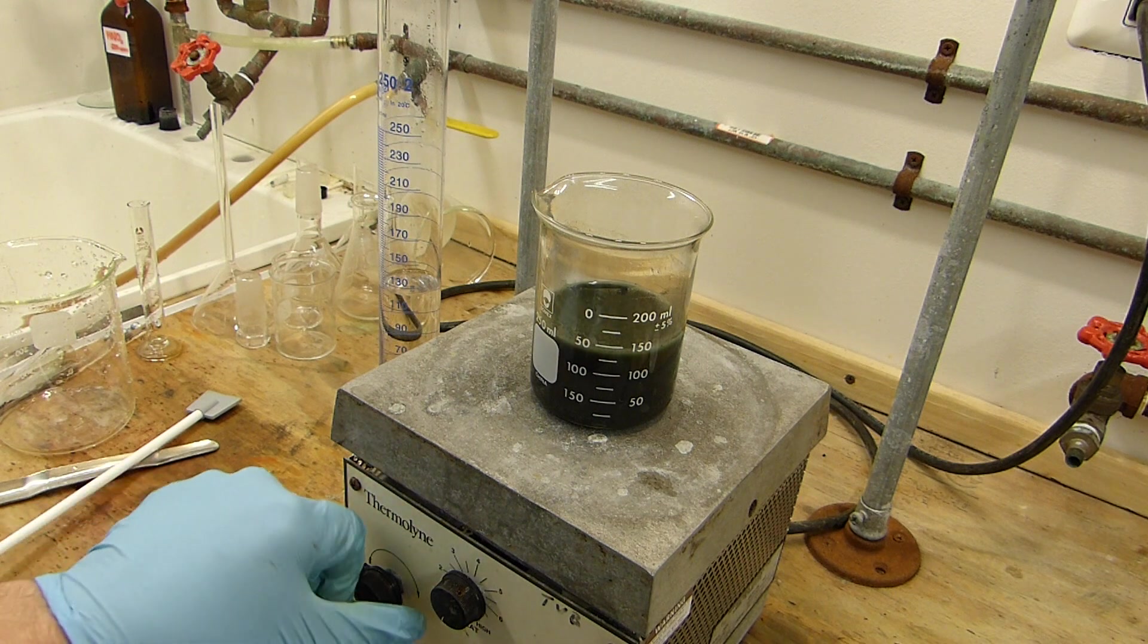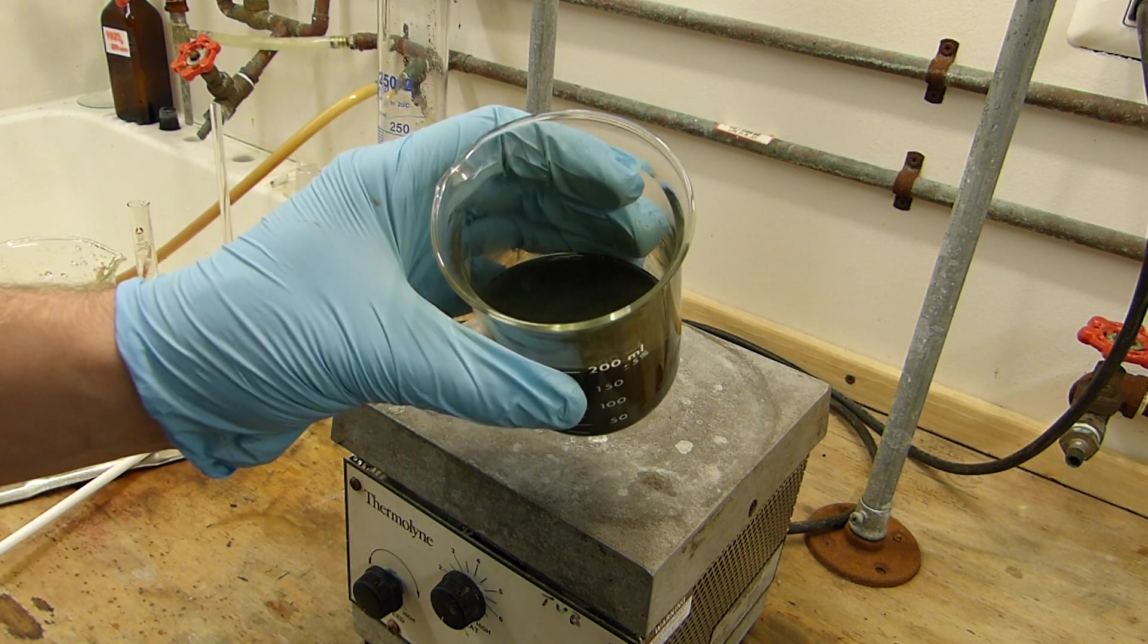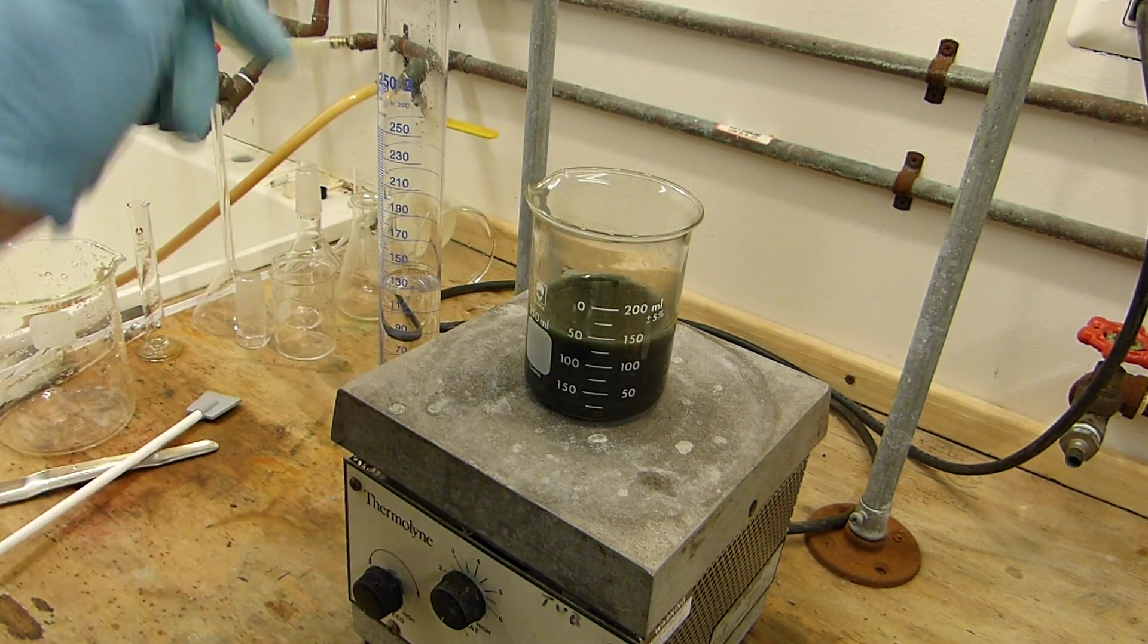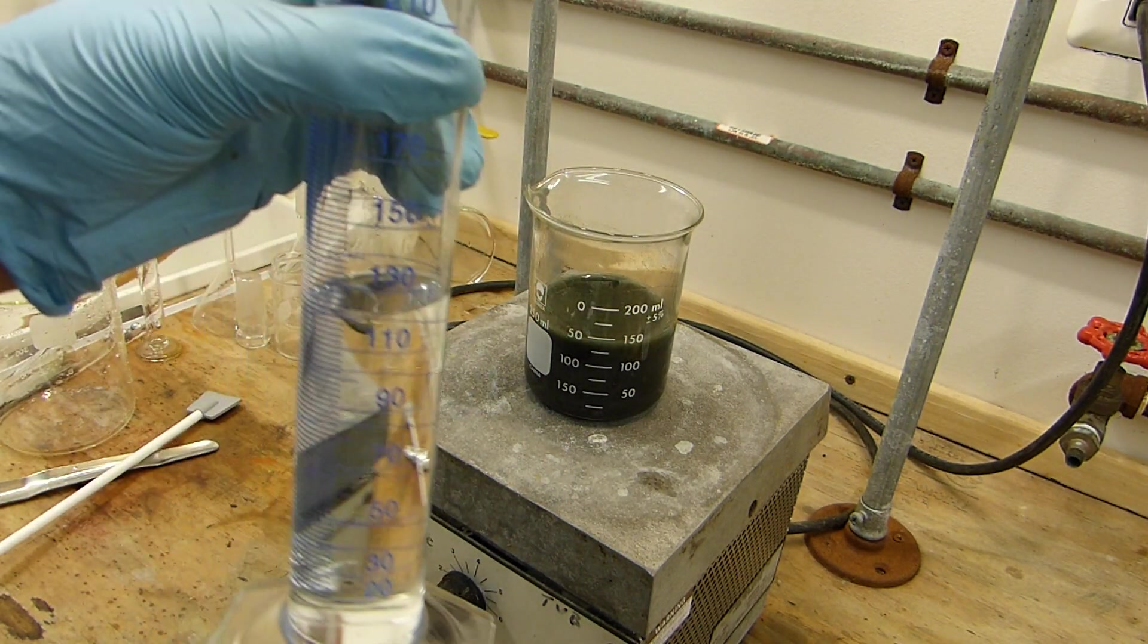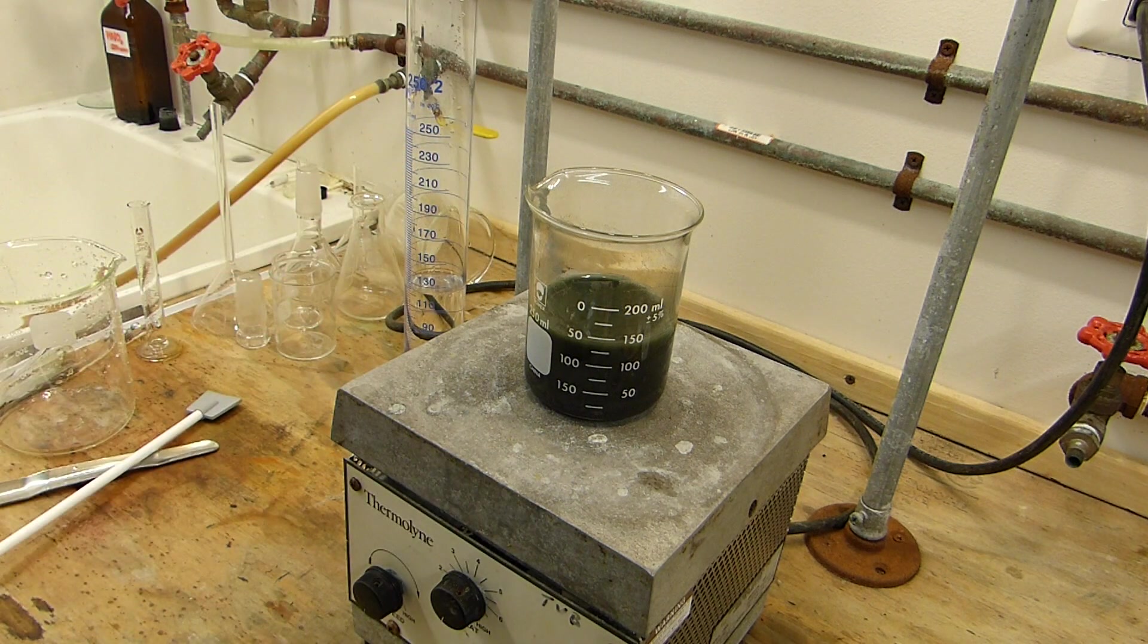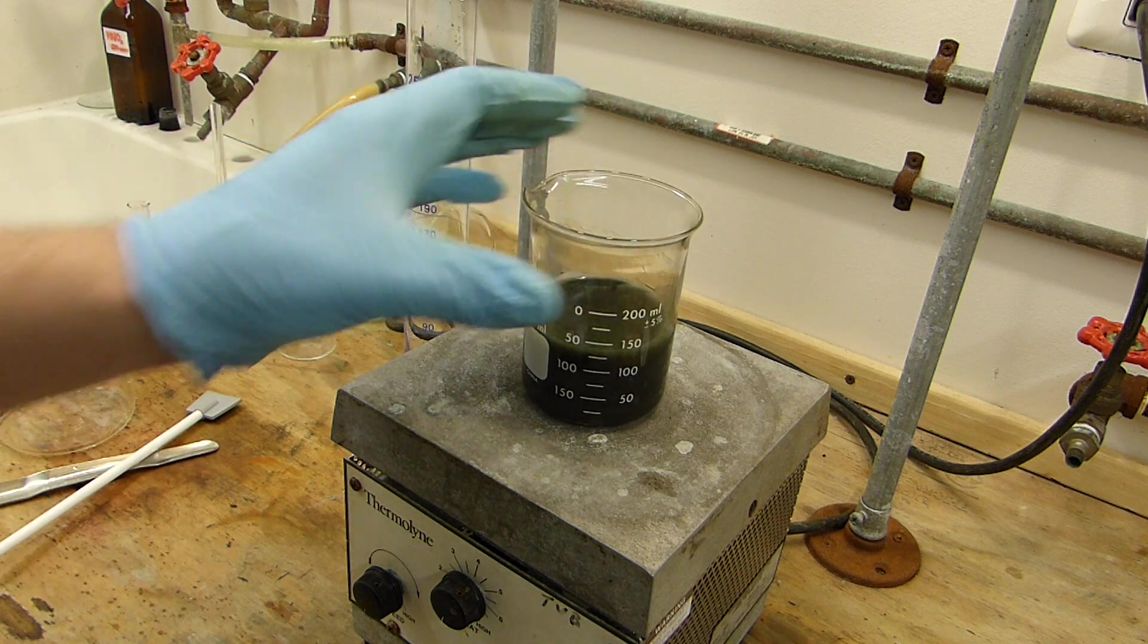All right, it's been about 10 minutes. I'm turning off the stirring, and we're just going to let this settle as much as possible. After about 10 more minutes, I'll decant the supernatant liquid and add this fresh portion here of 10% acetic acid. And then we'll just repeat the process, and then we can filter, wash, and dry the product.